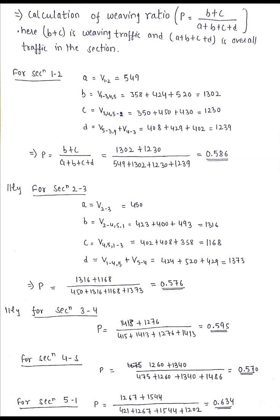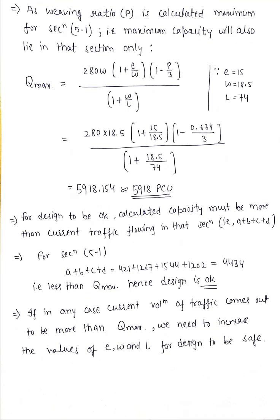The next step will be to calculate the maximum capacity. Using the values of E, W, and L, we'll put all those values in the formula of maximum capacity and we get maximum capacity is 5918.154, so approximately 5918 PCU is the maximum capacity of that section. So it is our design value.